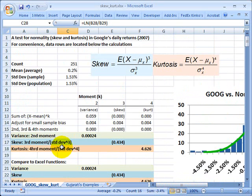So if I go back here to the plot or to the calculations, to get skew and kurtosis, all I need are four calculations. I need the number of observations. In this case, I have 251 daily returns. I need to calculate the average.